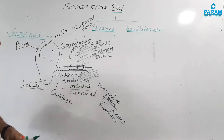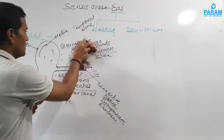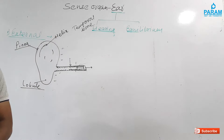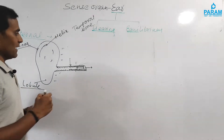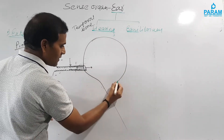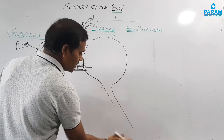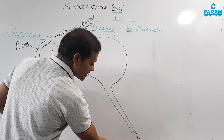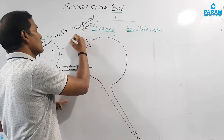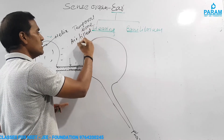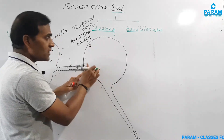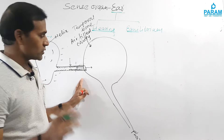The next part is the middle ear. The middle ear is an air-filled cavity which opens through a tube into the pharynx. This air-filled cavity contains the tympanic membrane, and the middle ear shows presence of three ossicles, or three bones, which are connected in a chain to one another.